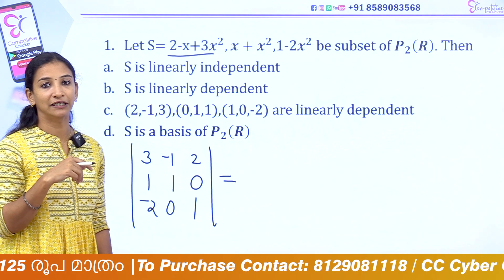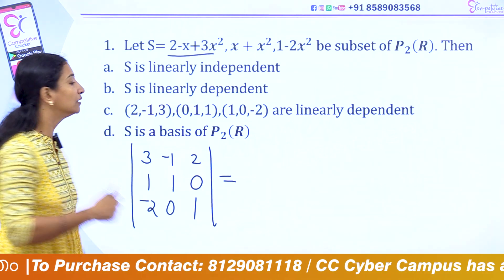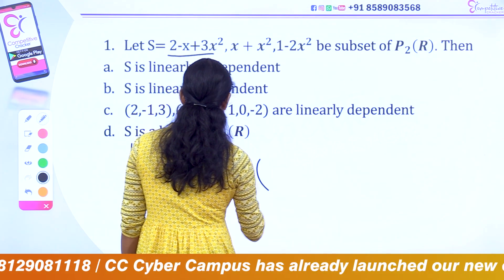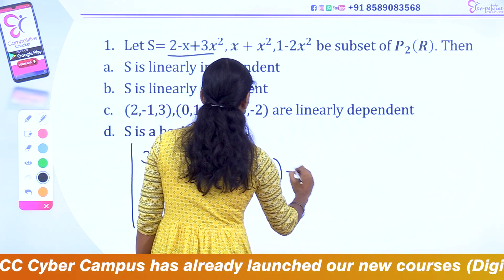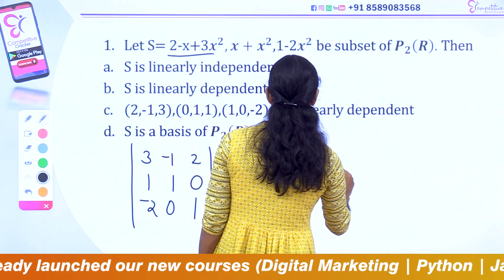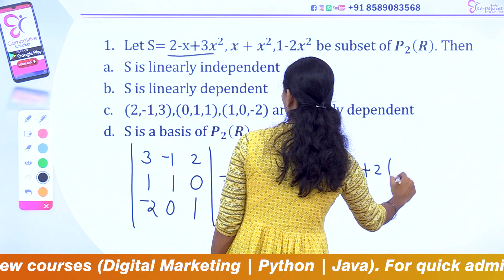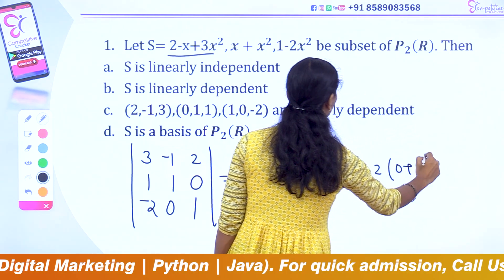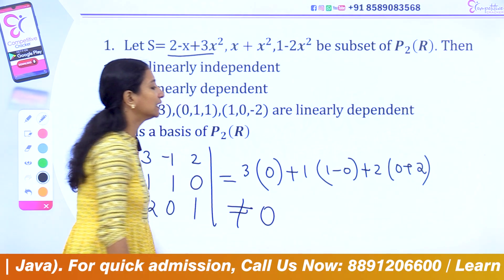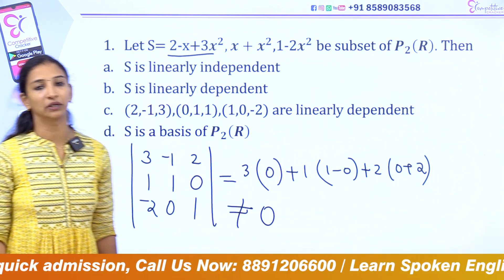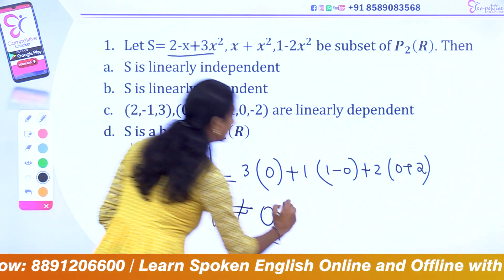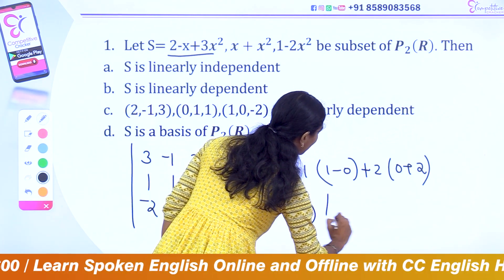The determinant determines linear independence or dependence. Calculating: 3 × (0×1 − 1×0) − (−1) × (0×1 − 1×1) + 2 × (0×0 − 1×(−2)), which is not equal to 0. The given vectors are linearly independent.